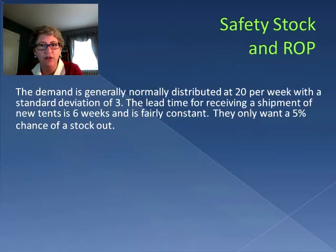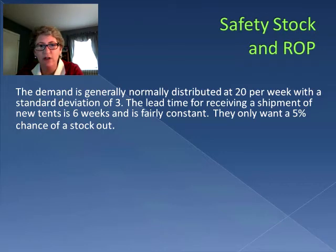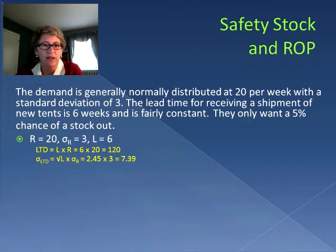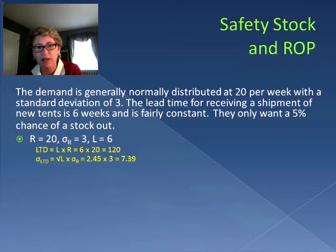Our next step is figuring out the safety stock. We know they only want a 5 percent chance of a stock out, the demand is normally distributed at 20 per week with a standard deviation of 3, and the lead time is constant at 6 weeks. Because the lead time is constant, we only deal with variability in demand. We calculate lead time demand by taking 6 weeks times 20 per week, giving us a lead time demand of 120.